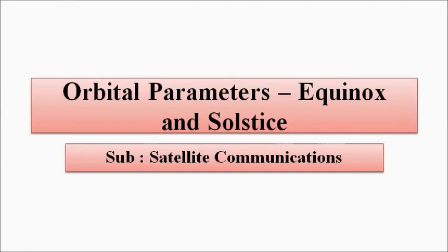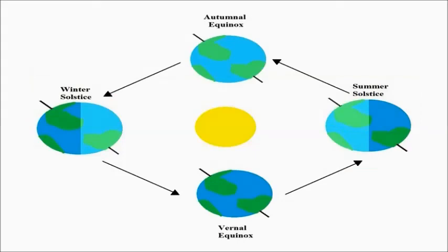We are going to discuss about equinox and solstice. Before that, we must be clear that earth rotates about its own axis and also around the sun. These two events will be related to that. A few points are very important to discuss beforehand to understand equinox and solstice.